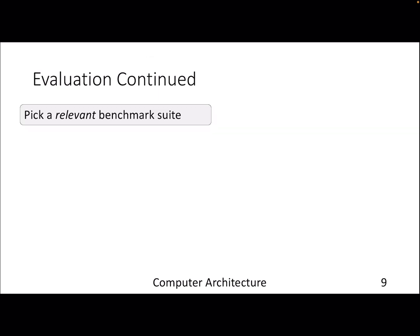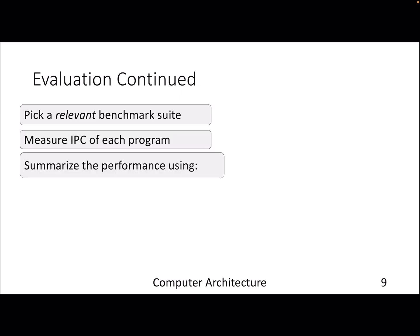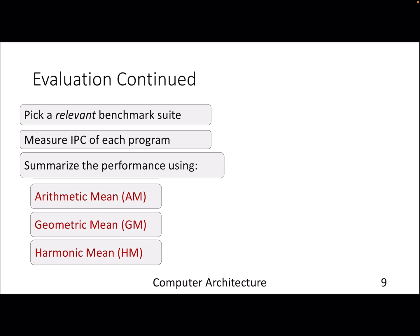Let's continue the evaluation process. We have picked the benchmarks and measured the IPC. Now we need to decide which processor or idea is better, meaning we need to summarize our evaluation. For example, if you run SPEC benchmarks and find the IPC for each benchmark, you need to find one particular number that tells you this processor is better than that one. So the question becomes: which kind of mean to use — arithmetic mean, geometric mean, or harmonic mean?